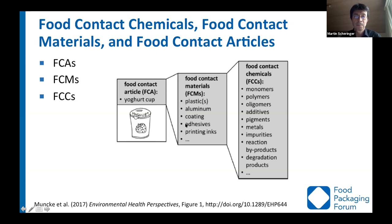Each of these materials consists of or contains chemicals — food contact chemicals (FCCs) — such as metals, for example aluminum, but also all the elements and ingredients of a polymer: the plastic contains a polymer, but also residuals, monomers, additives, byproducts, and degradation products that are not intentionally added. So this is how we refer to FCAs, FCMs, and FCCs.